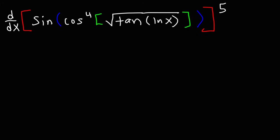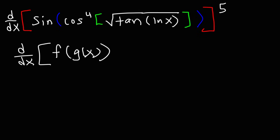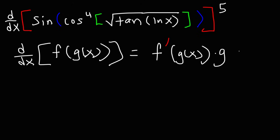Before we work on this example, let's talk about how to use the chain rule. If we have the composite function f of g of x, where g is inside of f, you need to take the derivative of the outside part — that is of f — while leaving the inside part g the same, and then multiply that by the derivative of the inside function, g prime. That's the process for using the chain rule to find the derivative of composite functions.